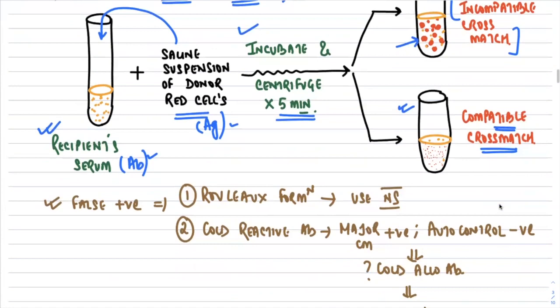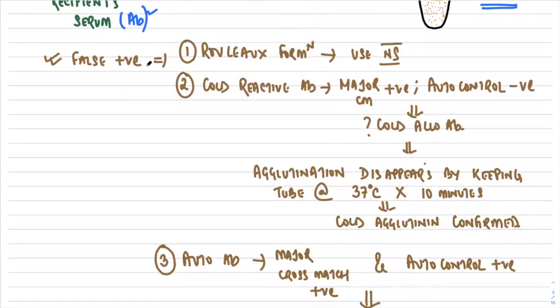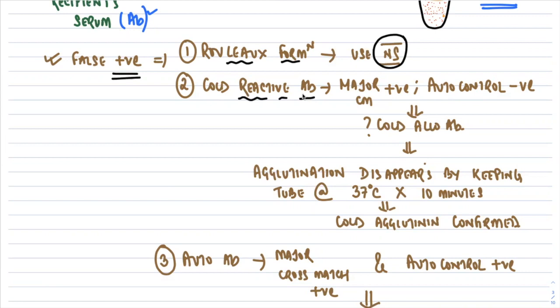There are conditions where the cross-match can give a false positive — agglutination that is actually false. The first is rouleaux formation: in conditions like multiple myeloma, excess plasma proteins cause rouleaux that mimics agglutination. Adding normal saline will dissolve rouleaux but not true agglutination. If the cross-match becomes negative after adding saline, rouleaux formation is confirmed.